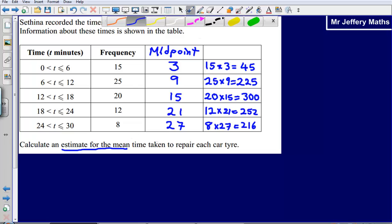So now, again, just following exactly the same things as we did before, we're just going to add all of these things together. So 45 plus 225 plus 300 plus 252 plus 216, that's going to give me an answer of 1038.